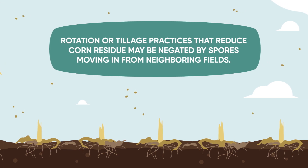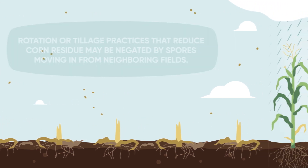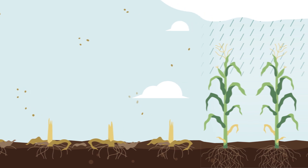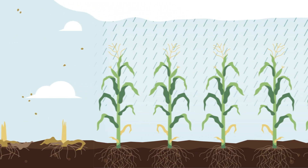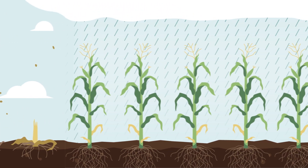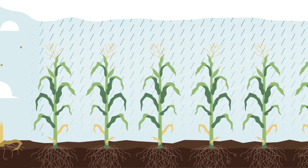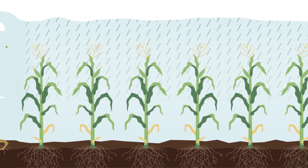Spores can still come from neighboring fields or from fields counties away. When favorable conditions return during the next corn growing season, new spores are released, starting the tar spot cycle over again.